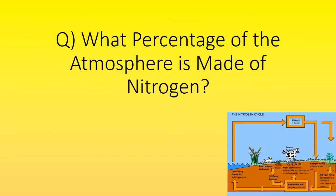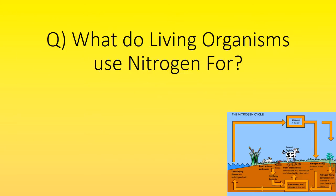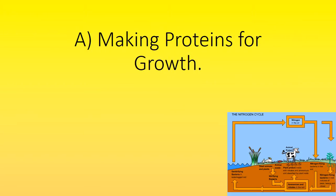What percentage of the atmosphere is made of nitrogen? 78%. What do living organisms use nitrogen for? Making proteins for growth.